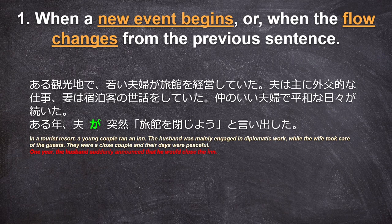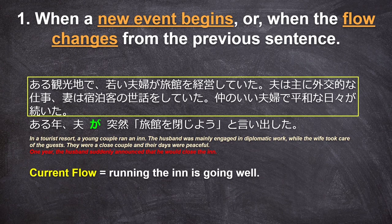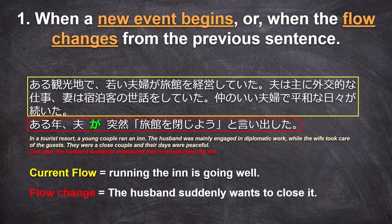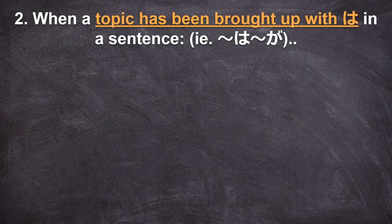仲のいい夫婦で平和な日々が続いた。ある年、夫が突然旅館を閉じようと言い出した — In a tourist resort, a young couple ran an inn. The husband was mainly engaged in diplomatic work while the wife took care of the guests. They were a close couple and their days were peaceful. One year, the husband suddenly announced that he would close the inn. In this example, there's a young couple running an inn and it seems to be going well, and then all of a sudden the husband announces they will close the inn. The flow changed drastically from the previous sentence, so it's okay to use が to emphasize the sudden change even though the topic has already been mentioned.